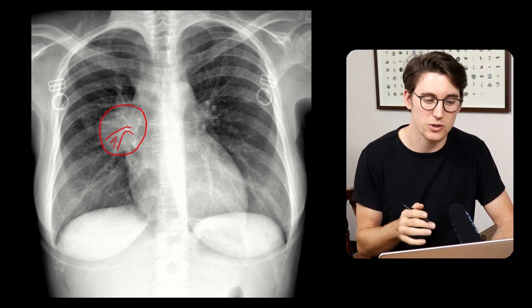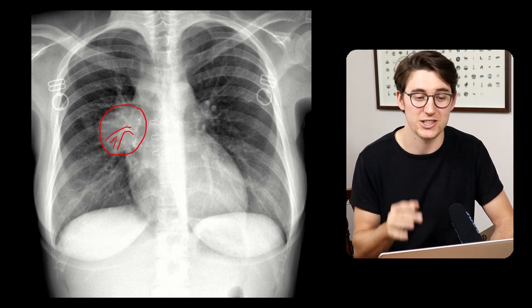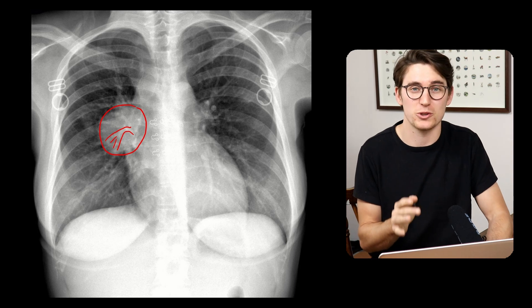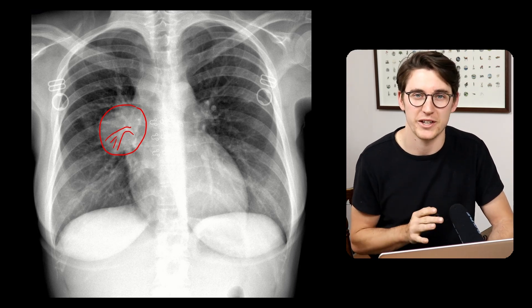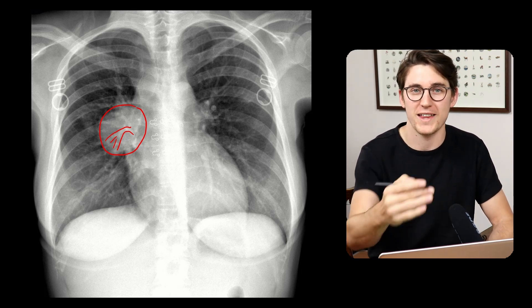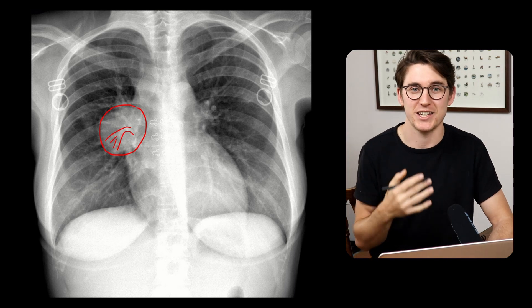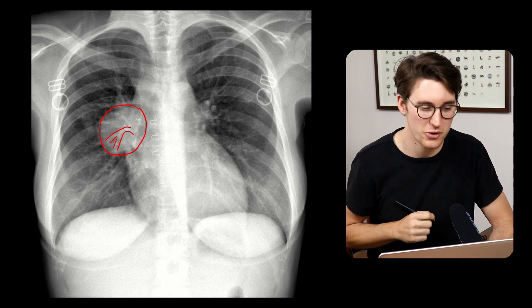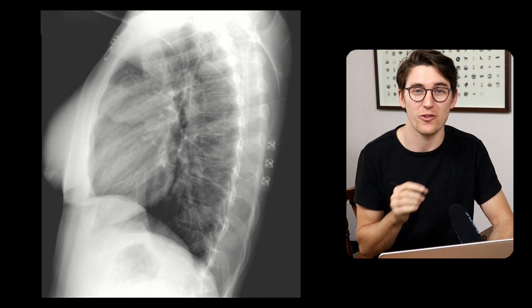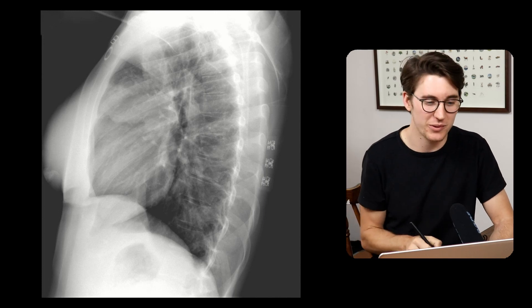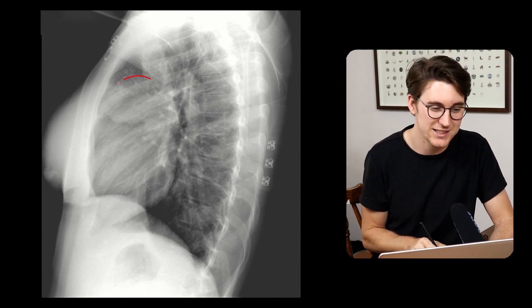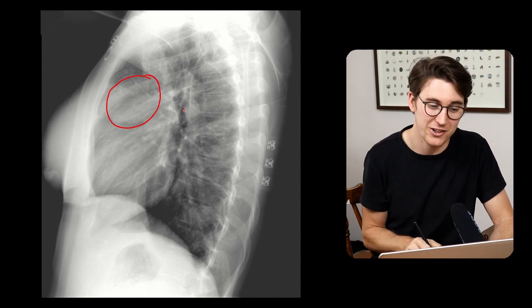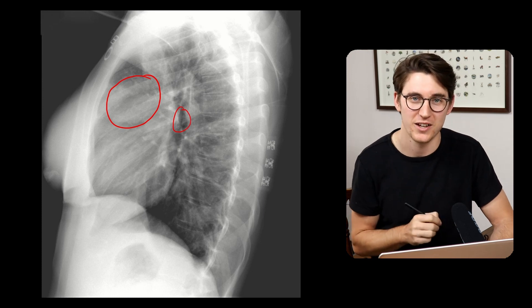This is known as the hilum overlay sign, and it's a really powerful tool — especially if we only have a frontal radiograph — to determine where that mass is sitting, whether it's anterior, posterior, or within the pulmonary hilum. Luckily with this radiograph we also have a lateral, and we can clearly see that the mass is sitting within the anterior mediastinum and not within the pulmonary hilum.